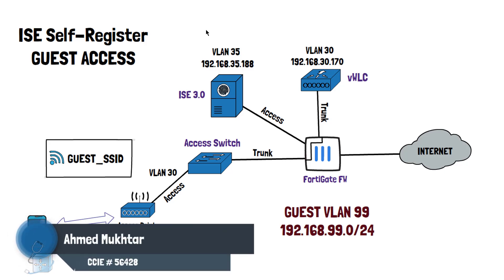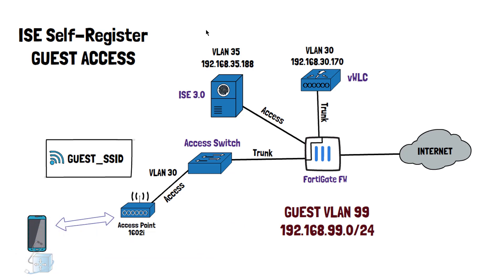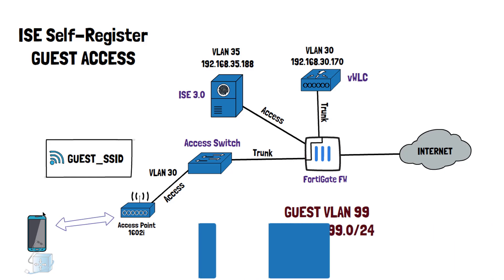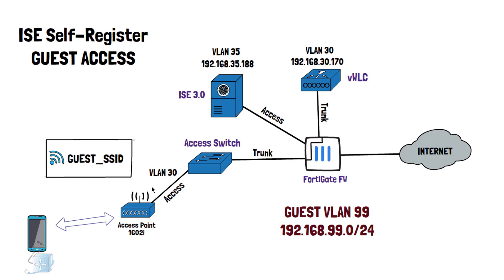Hello everybody. This is Ahmad Mukhtar, and today we're going to be doing a small lab on ISE with guest access. A guest user is going to come up in my organization and connect to a specific SSID called guest_SSID. Once it connects, we want it to get a portal on which it has to register their name, their number, who they want to visit. We can amend the fields, and they're going to be prompted with their username and password, and then they have to log in again to connect and get internet access.